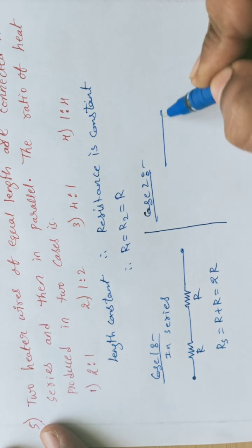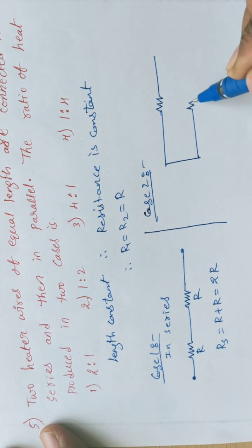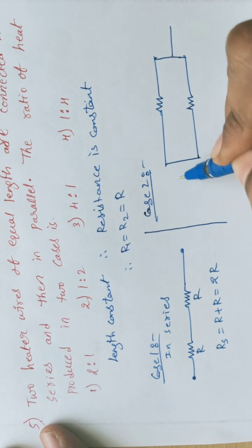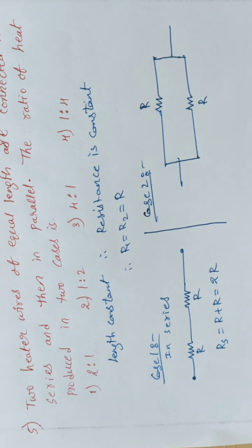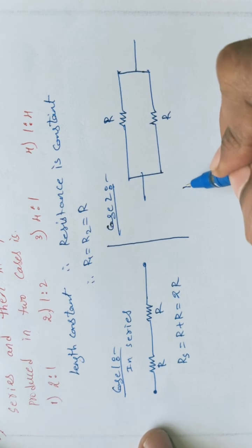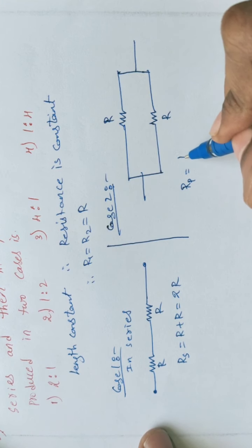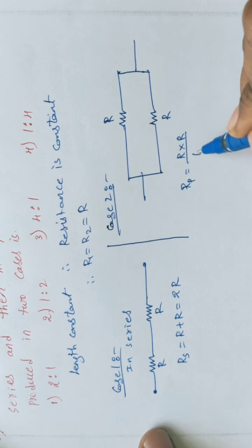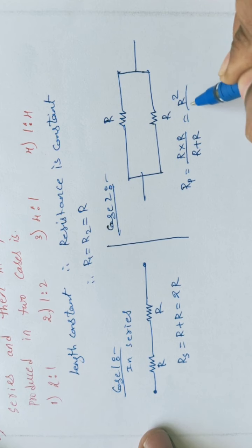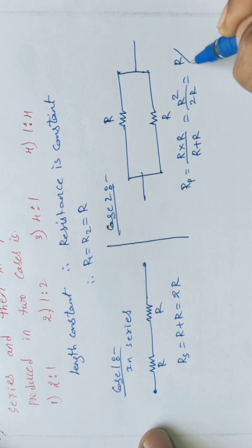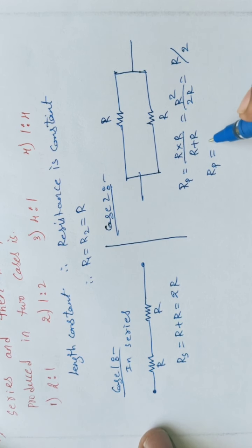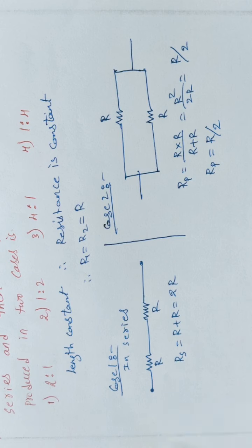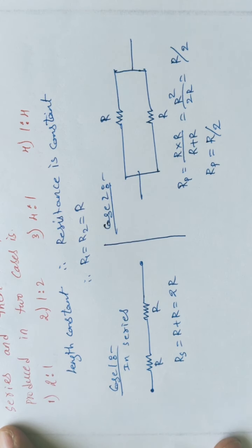In Case 2, the same resistors are connected in parallel. The effective parallel resistance Rp equals R into R divided by R plus R, which equals R squared divided by 2R, giving Rp equals R by 2.